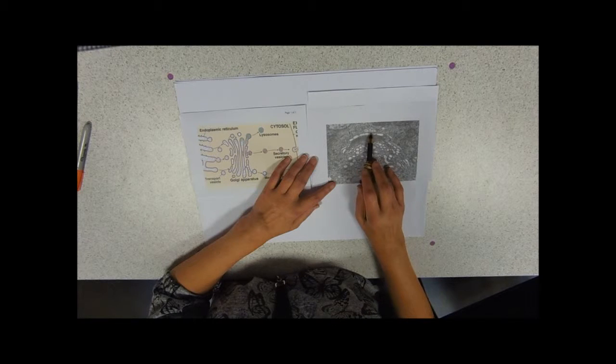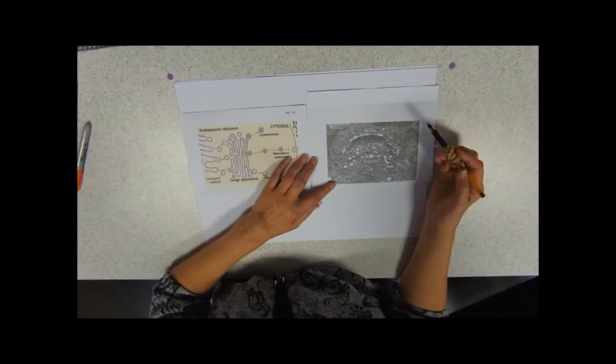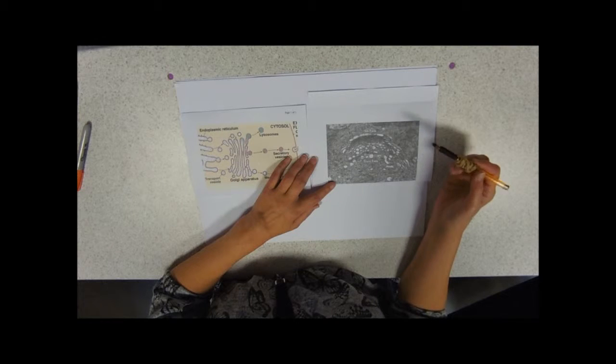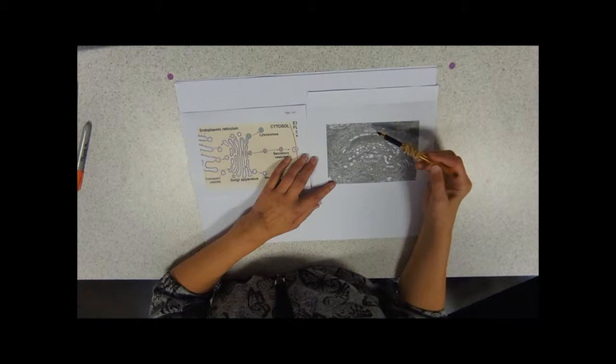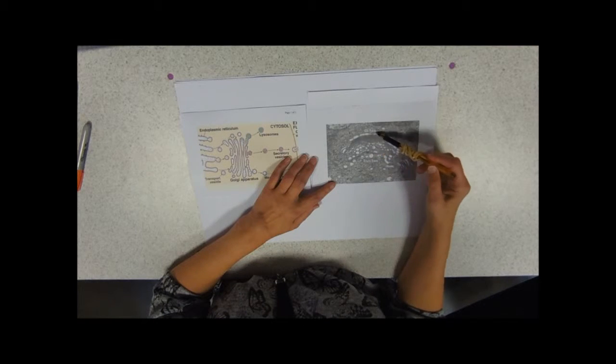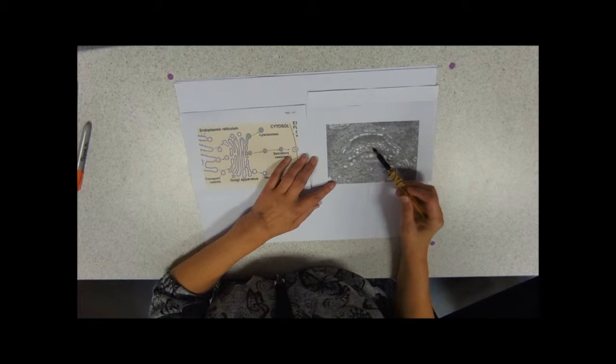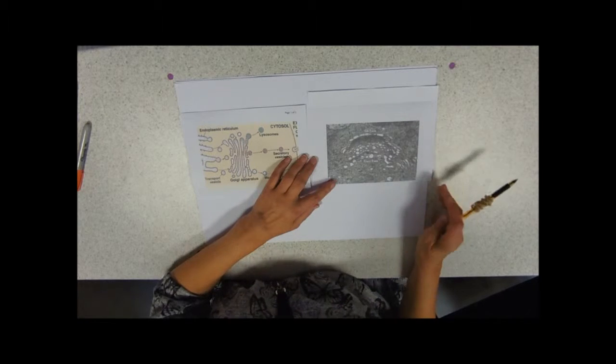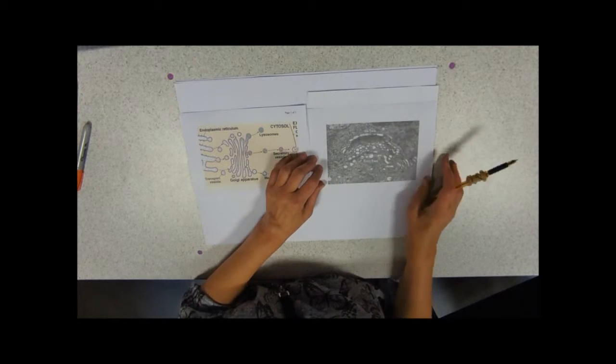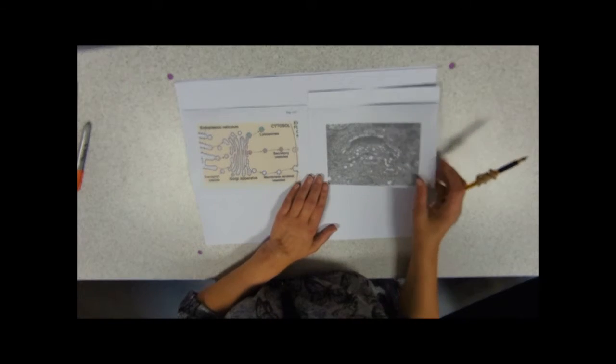The cis face generally would be facing towards the nucleus and the endoplasmic reticulum. This is where the Golgi body is forming and this is where it's budding off all sorts of vesicles full of things. That's what to look for in an electron micrograph.